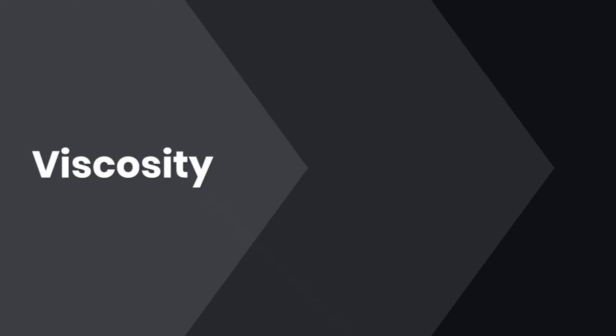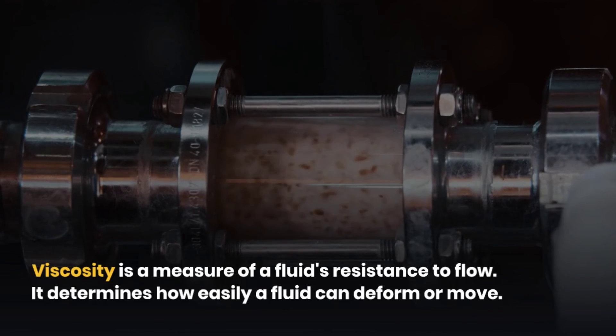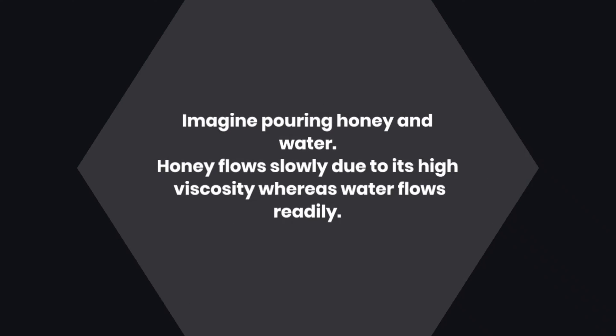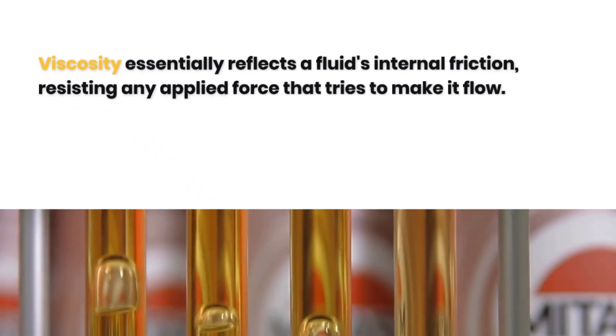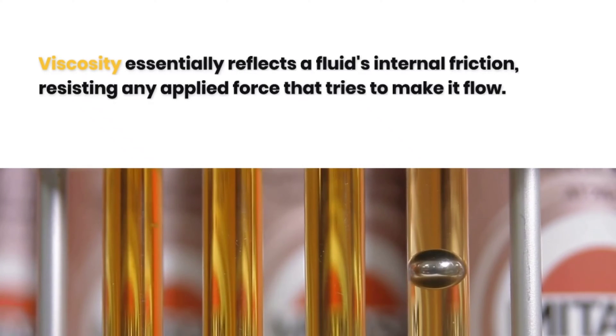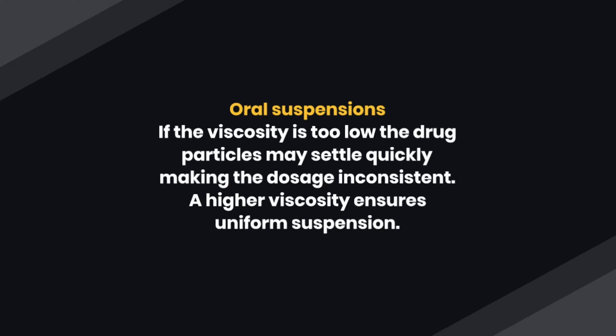The first concept is viscosity. Viscosity is a measure of a fluid's resistance to flow. It determines how easily a fluid can deform or move. Imagine pouring honey and water — honey flows slowly due to its high viscosity, whereas water flows readily. Viscosity essentially reflects a fluid's internal friction, resisting any applied force that tries to make it flow. For example, in the case of oral suspensions, if the viscosity is too low, the drug particles may settle quickly, making the dosage inconsistent. A higher viscosity ensures uniform suspension.